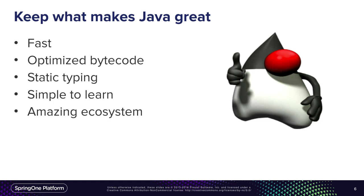At the same time, we want to keep what makes Java great. Java is fast. It produces optimized bytecode. It has static typing that allows us to have nice autocomplete in the IDE, and to do a lot of checks during compilation — especially for big projects, that's very important. It's quite simple to learn, and it has an amazing ecosystem. In Spring, we are in this ecosystem, so we want to keep that.